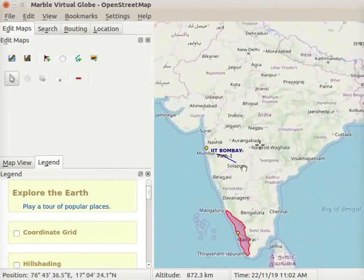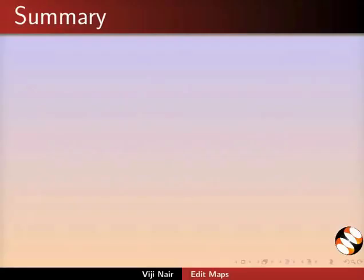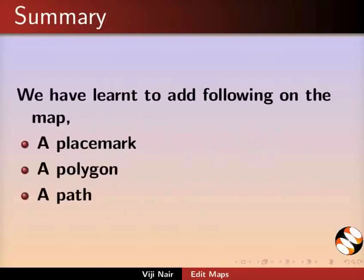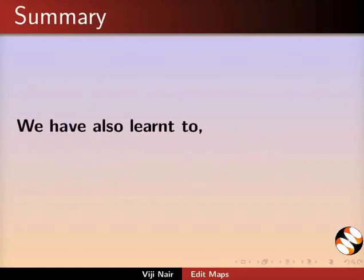We will learn more about Edit Maps in the upcoming tutorials. Let us summarize. In this tutorial, we have learnt to add the following on the map: a placemark, a polygon, and a path. We have also learnt to save an annotation file.